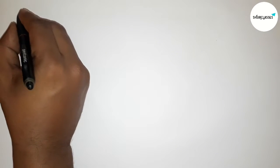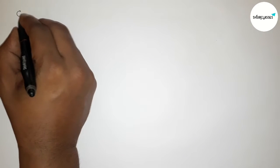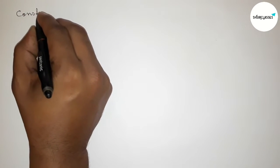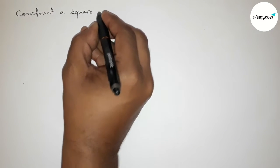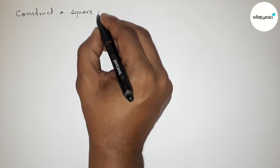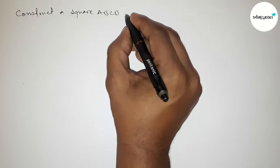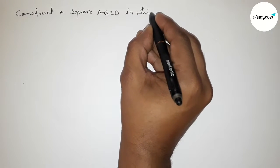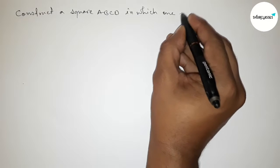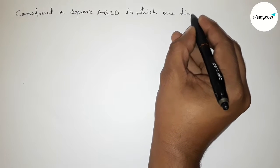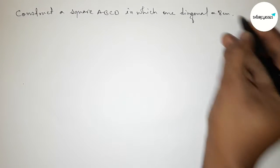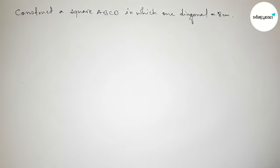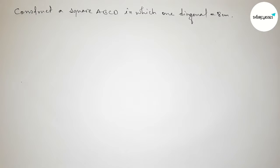Hi everyone, welcome to SI Share Classes. Today in this video we have to construct a square ABCD in which one diagonal equals 8 centimeters. Please watch the video till the end. Let's start.